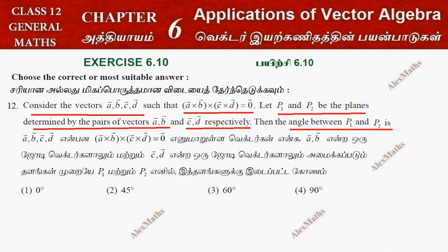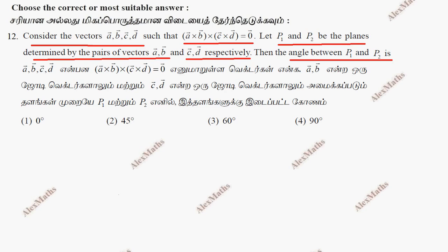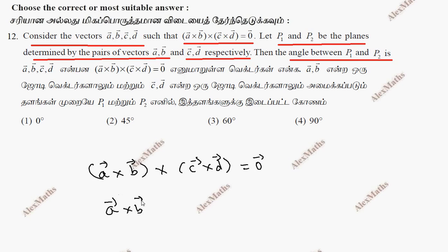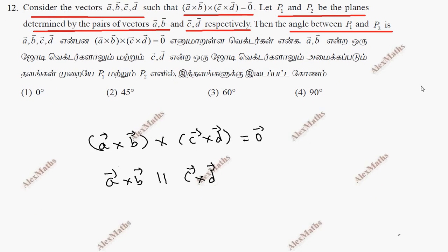So this cross product equals zero, meaning A cross B cross of C cross D equals the zero vector. Therefore A cross B is parallel to C cross D. The plane P1 is determined by the pair of vectors A and B, so its normal is A cross B. The plane P2 is determined by C cross D.